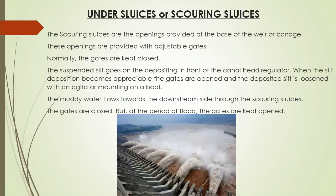The next component of diversion headworks is under sluices or scouring sluices. These are openings provided at the base of the weir or barrage, fitted with adjustable gates. Normally the gates are kept closed. When suspended silt deposits in front of the canal head regulator and becomes appreciable, the gates are opened, the deposited silt is loosened with an agitator mounted on a boat, and the muddy water flows to the downstream side through the scouring sluices. The gates are then closed. During periods of flood, the gates are kept open.